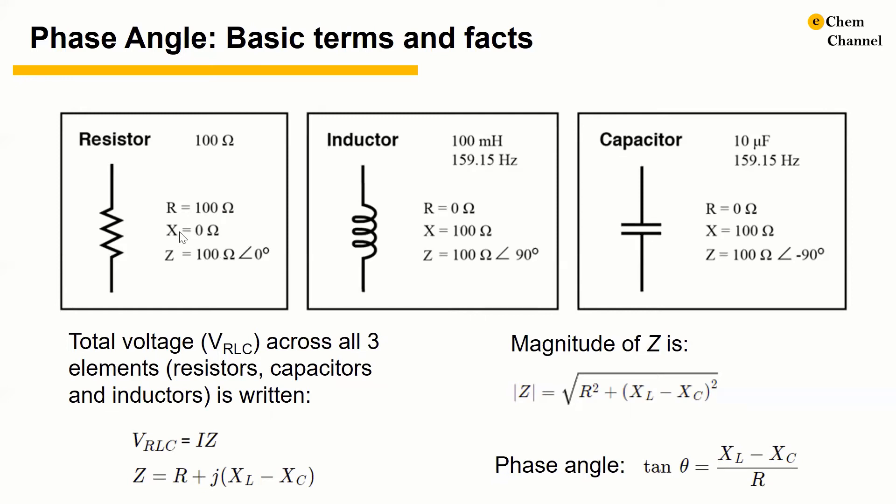Reactance is an inertia against the flow of current. It is present anywhere electric and magnetic fields are developed in proportional to an applied voltage or current and is most notable in inductors and capacitors.